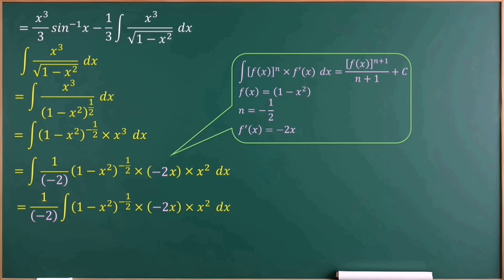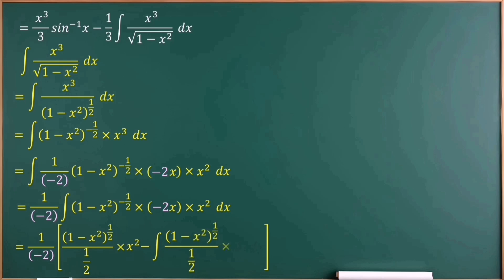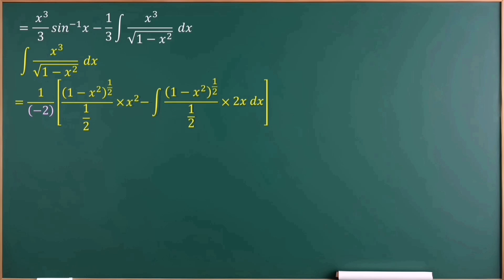Now we have f(x), n, and f'(x) identified. The integral of (1 minus x squared) to the power of minus one half times minus 2x equals (1 minus x squared) to the power of one half over one half. We write the x squared term as it is. Minus the integral of (1 minus x squared) to the power of one half over one half, times the differentiation of x squared, which is 2x. The denominator value one half is a constant, so we bring 1 over one half outside the integral.